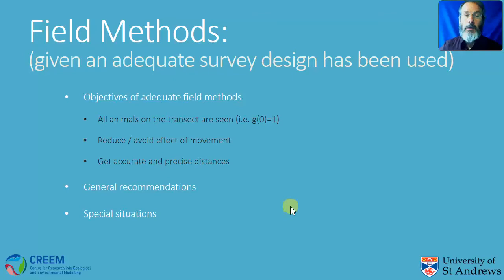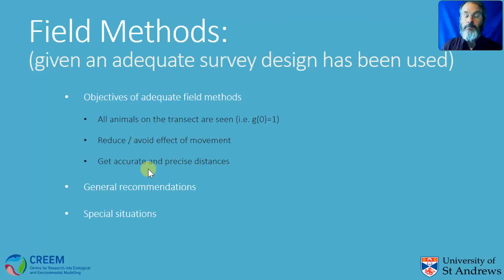I have a few things I want to accomplish in this lecture. I want to give you the idea of the assumptions that underlie distance sampling — namely, all animals are seen on the transect, all animals are stationary at the time the survey is conducted, and all measurements of distances are correct. I'll also go through some general ideas of good field protocols and talk about a couple of special situations before I summarize.